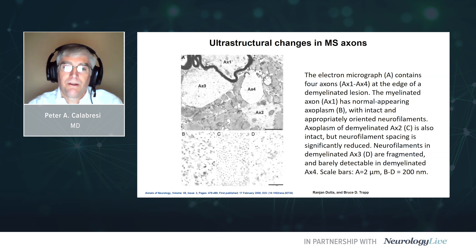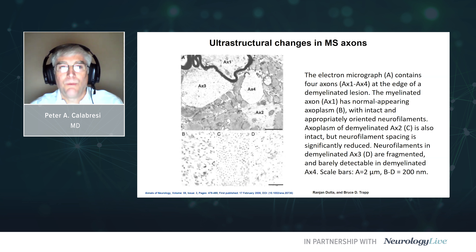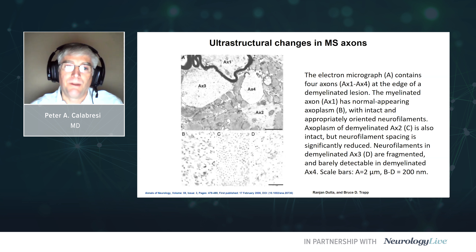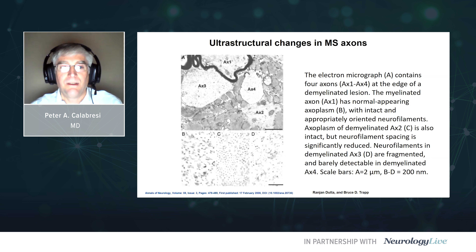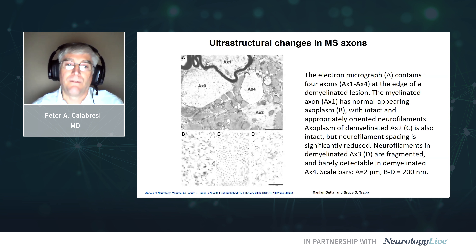This has been well described by Ranjan Dutta and Bruce Trapp at the Cleveland Clinic over a decade ago. They showed examples of myelinated axons at the ultra-structural level with normally spaced neurofilaments. In myelinated axons, neurofilaments are phosphorylated and normally spaced. In demyelinated axons they become non-phosphorylated with closer spacing but may exist in a relatively intact, presumably reversible functional state. However, in more advanced cases of prolonged demyelination, the neurofilaments themselves become fragmented, and in extreme cases barely detectable, indicating a potentially advanced or irreversible phase of axonopathy.